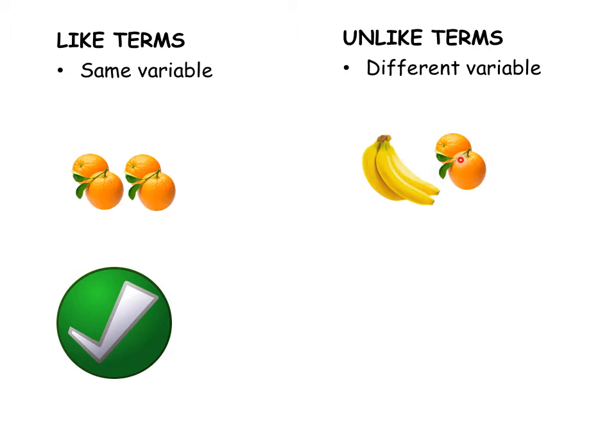Let's look at this example. We have three bananas here, one two three, and we have two oranges, one two. Can we count them together and say we have five bananas in all or five oranges in all? No, because even though they're both fruits they are two different fruits, so we cannot count these as like terms.